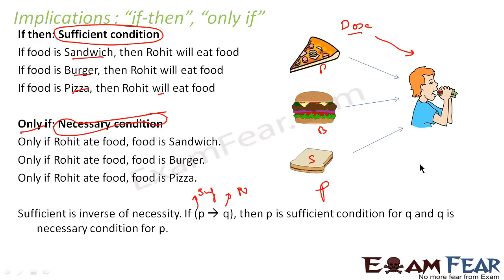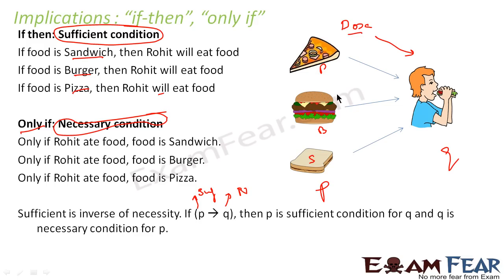In our example, the food items (pizza, burger, sandwich) represent P, and Rohit eating represents Q. So all those food items are sufficient conditions. But 'only if Rohit ate food' — Rohit eating becomes the necessary condition. In the case where P implies Q, if P is the sufficient condition then Q is the necessary condition. So 'if and then' is a sufficient condition and not a necessary condition. But 'Rohit ate food' is a necessary condition, because you first check whether Rohit ate food before concluding about the food type.